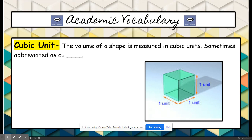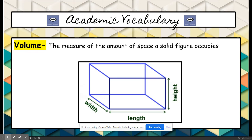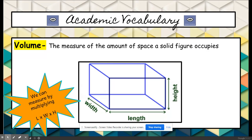Our academic vocabulary today is cubic unit. The volume of a shape is measured in cubic units, sometimes abbreviated as CU and then whatever type of unit—feet, inches, meters, centimeters, all of those. Volume is the amount of space that a solid figure occupies. You have a volume, I have a volume, a can of soda has volume, a picture frame has volume, anything that takes up space has volume. Today we're going to learn how to measure volume using the formula length times width times height. Length is how long a figure is, width is how wide, and height is how tall. We just multiply those three measurements to get the volume.